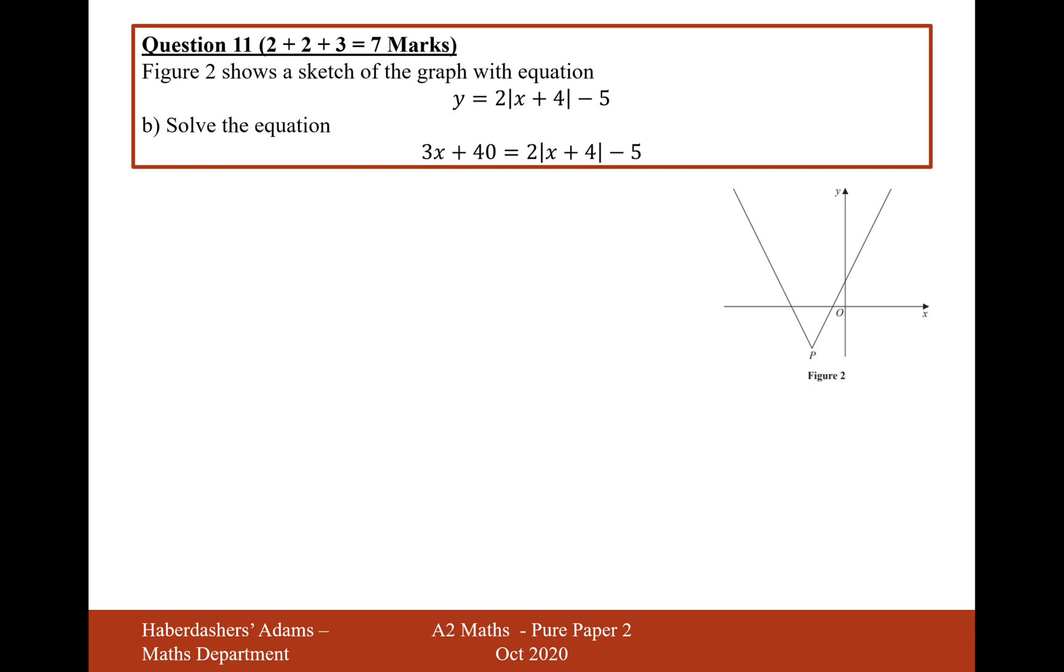Moving on to part B now, it's looking for us to solve the equation 3x plus 40 equals 2 mod x plus 4 minus 5. The first thing I'm going to do is draw this equation, 3x plus 40. And 40 is going to be way up here. If you work it out, this point here is going to be the coordinate 3. That's when x is 0, so that would be 0 plus 4 is 4, times 2 is 8, 8 minus 5 is 3.